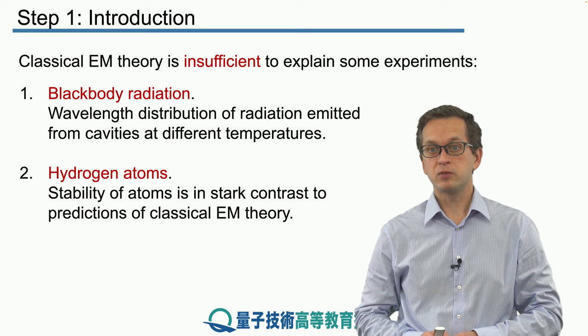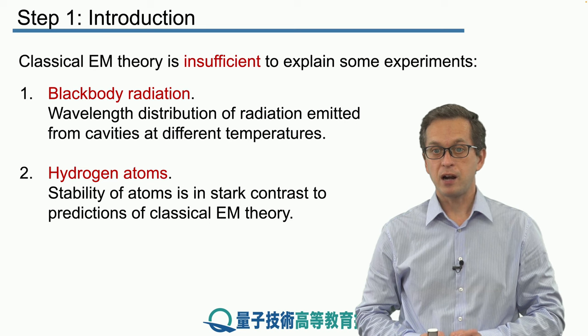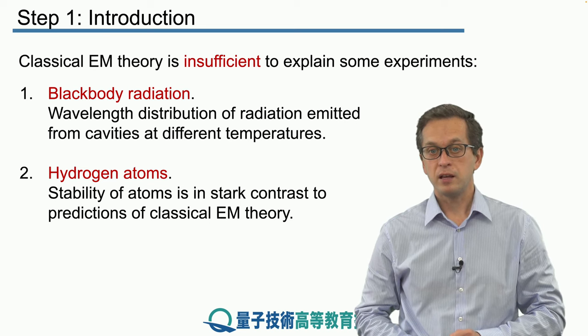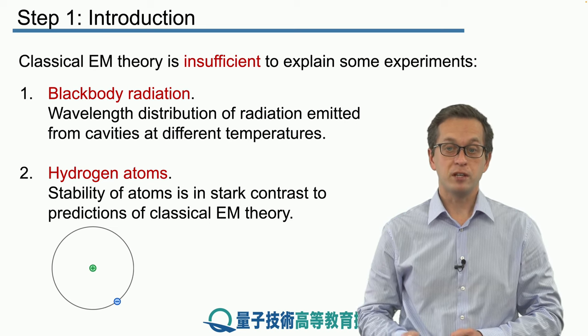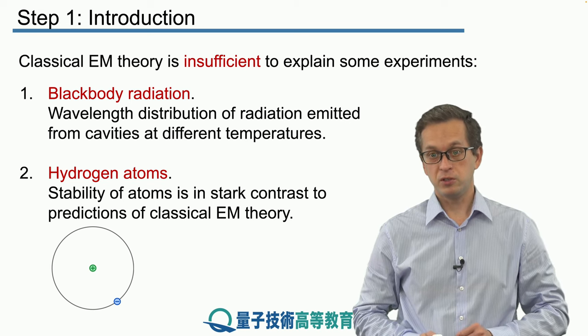Another key observation was the stability of atoms, in particular hydrogen atoms. So the model of an atom at the time was that there was a negative charge, the electron, orbiting a positively charged nucleus.